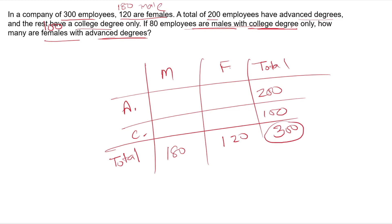Male college degree is 80. Advanced degree total is 200. So male advanced degree: 180 minus 80 equals 100. Female college degree and female advanced degree follow from the totals. The answer for female advanced degree comes out to 120. That is how you do this math using the double matrix method.